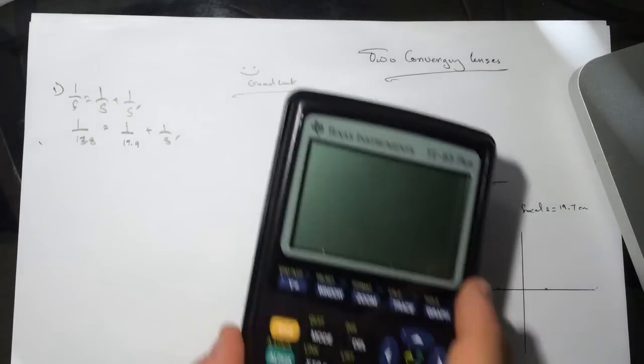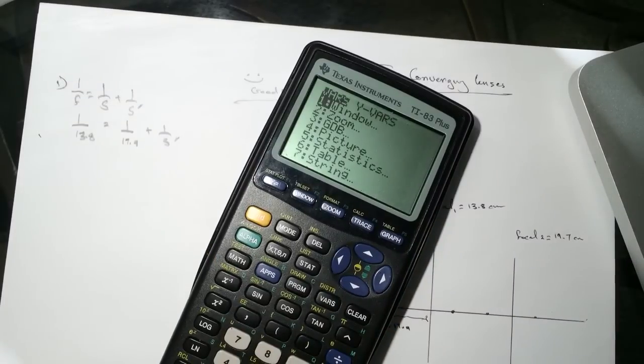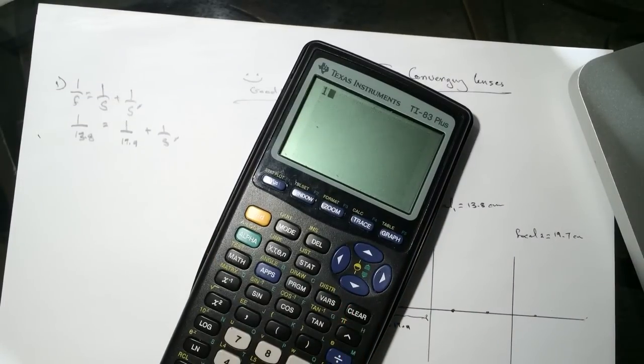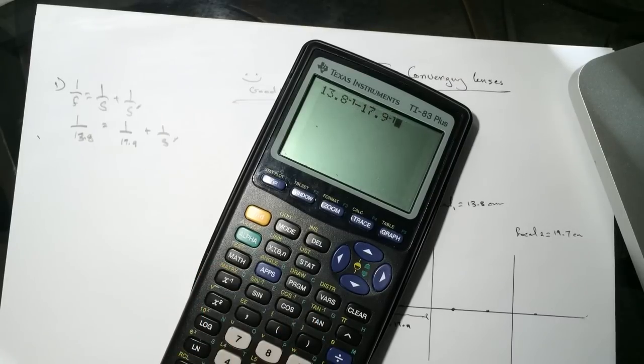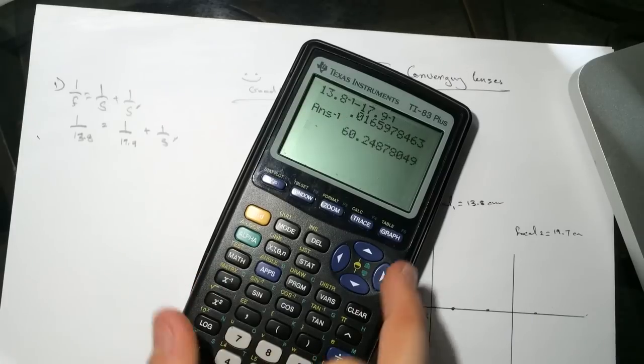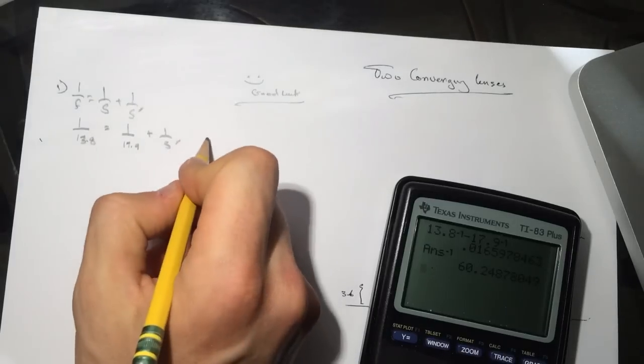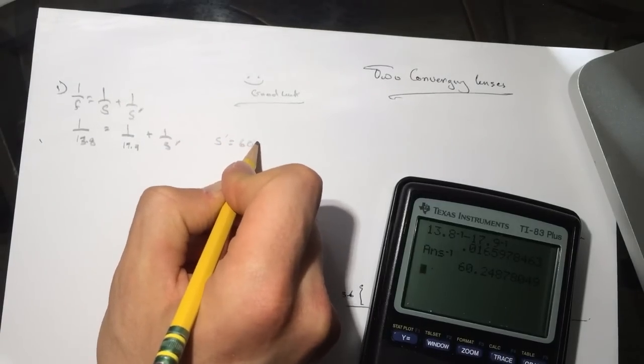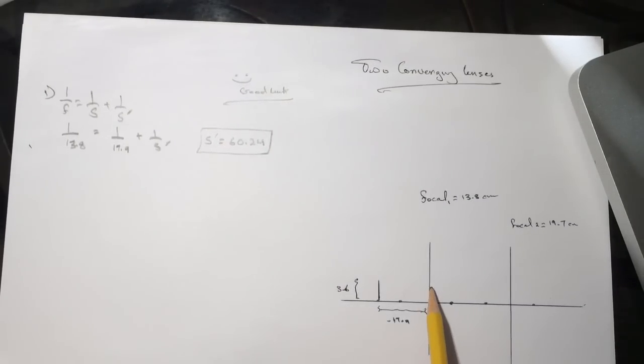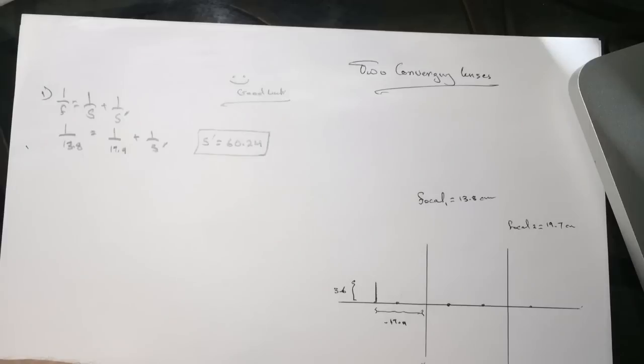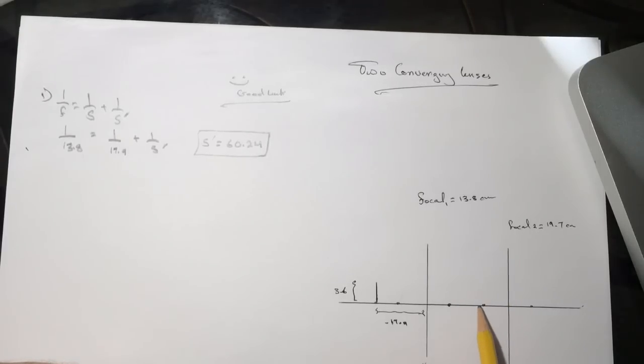Putting that in your calculator, so it's 13.8 power minus 17.9 power, you'll get 60.24. So S prime will be equal to 60.24. This is the distance of the image that's going to be produced by the first lens. If this was X equals 0, it's kind of going to be over here.